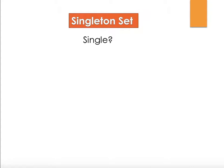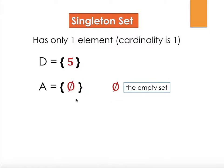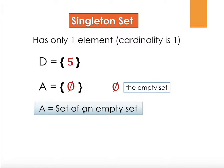Let's look at a singleton set. Singleton — single — means just one element, so the cardinality is 1. An example: D equals {5}. We can also write A equal to the set containing the empty set. Because the empty set is inside brackets, A is a set that contains the empty set as its element — it is a set of an empty set.